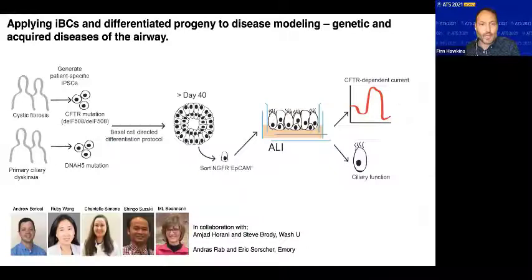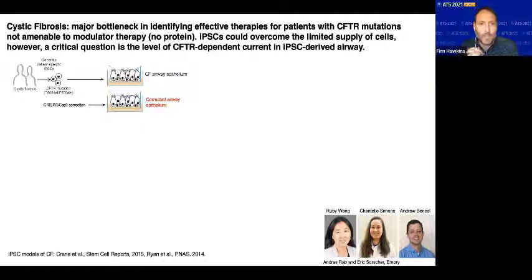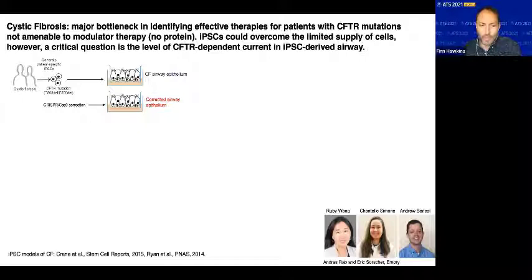How could the iPSC platform be helpful in the world of cystic fibrosis? We asked whether the iPSC platform could be used in the classic Ussing chamber assay to detect CFTR-dependent current. We previously generated iPSC cells from a patient homozygous for the delta F508 mutation and had previously published that the mutation was corrected. This left us with a pair of iPSC cells from the same individual that are genetically identical, except one carries the defective CFTR sequence and the other carries the normal sequence. We differentiated both iPSC lines into airway epithelium and performed Ussing chamber analysis.